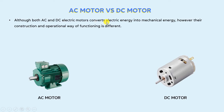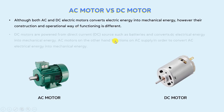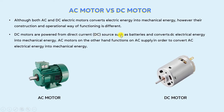Although both AC and DC electric motors convert electrical energy into mechanical energy, their construction and operational way of functioning is different. DC motors are powered from a direct current source such as batteries in order to convert DC electric energy into mechanical energy. On the other hand, AC motors function on AC supply in order to convert AC electrical energy into mechanical energy.